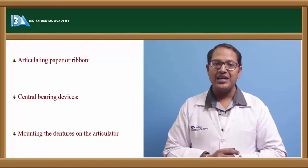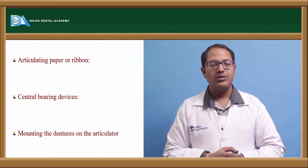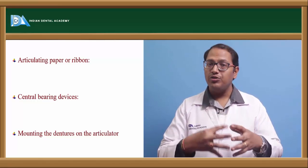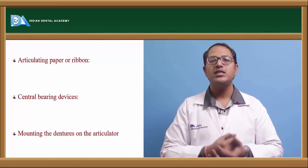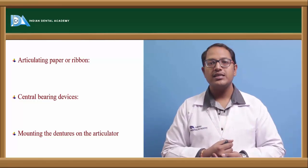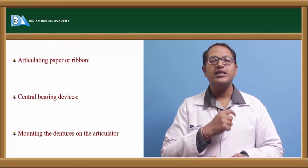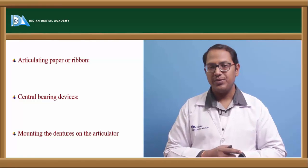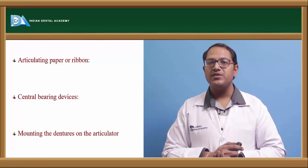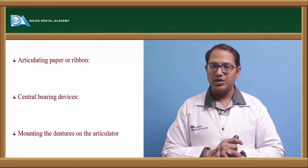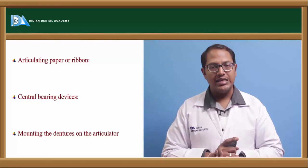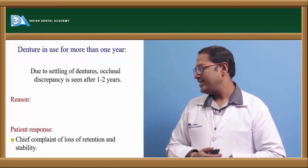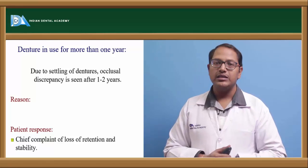Center bearing devices can also be used to identify occlusal discrepancies. Mount the dentures on the articulator using the center bearing plate and center bearing point to record the jaw relation. Then perform all movements on the articulator to locate occlusal discrepancies and make corrections there. After correction on the articulator, replace the denture in the patient's mouth. If centric relation and protrusive records and articulator programming are accurate, selective grinding can be done entirely in the lab rather than chairside.